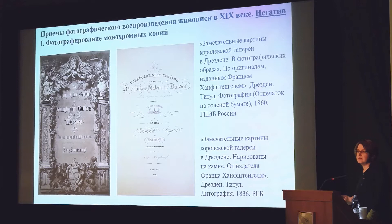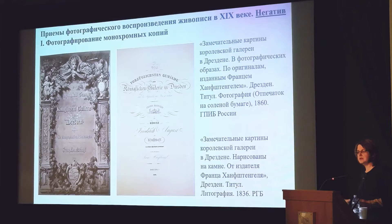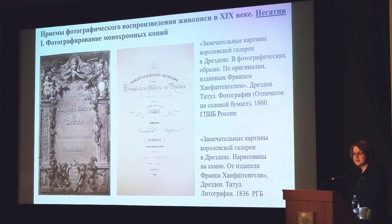One of the earliest ways of reproducing paintings with the help of photography, as Irina mentioned, is photographing not the painting itself but searching for an intermediary — a monochrome copy. This is connected with the color blindness of early photography: photographic materials had uneven light sensitivity across the spectrum range. Yellow and red appeared almost black, and blue appeared gray in early photography. Scholars worked on increasing spectral sensitivity throughout the whole century, but fully accessible full-spectrum photography only appeared in the early 20th century.